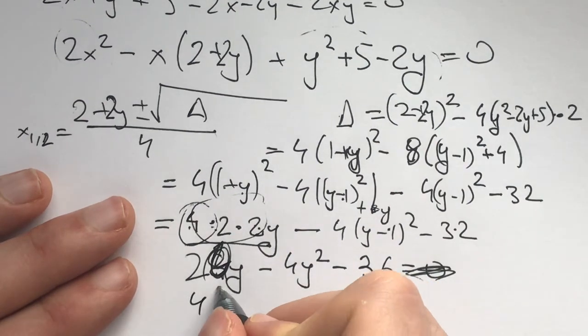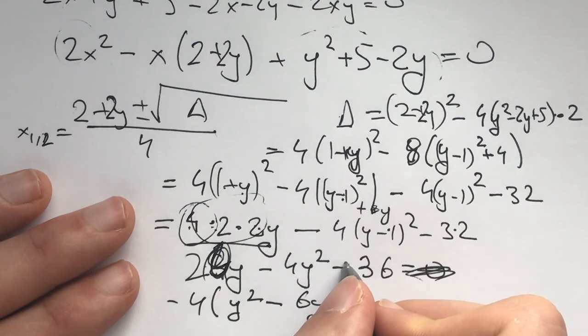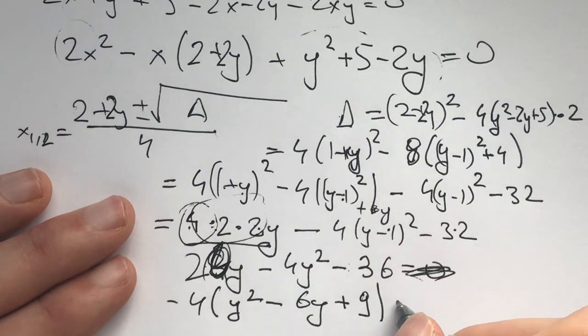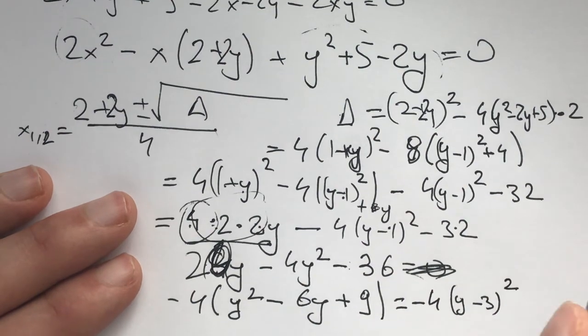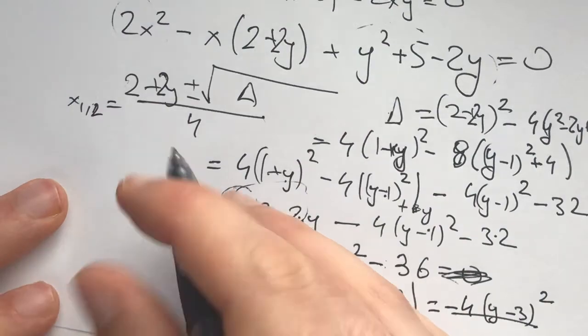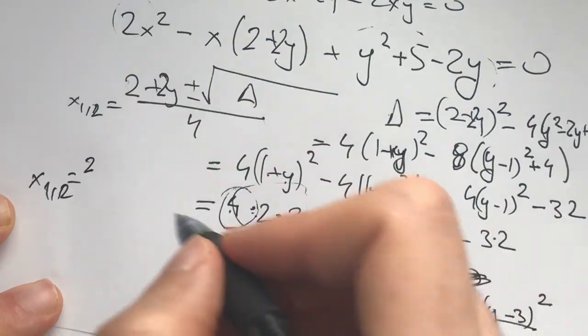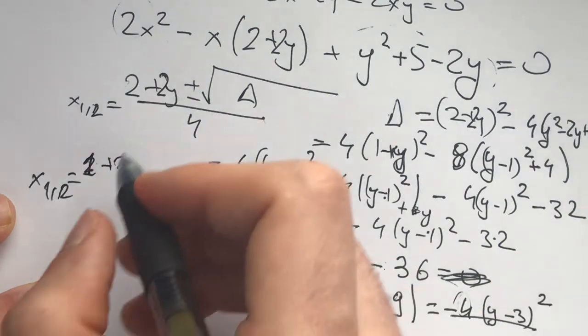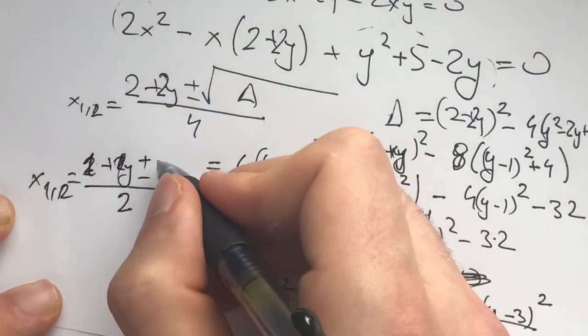So this whole thing is going to equal 4 times... minus 4 times (y squared minus 6y plus 9). Now this thing equals negative 4(y minus 3) squared. So we have the discriminant: x₁,₂ equals, let's divide everything by 2. It's going to be (1 plus y) over 2 plus/minus what's the discriminant.